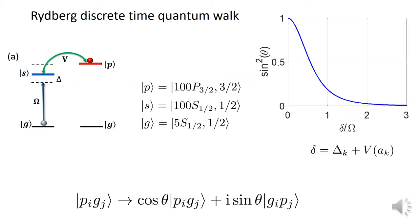To explain the scheme, first consider two lattice sites. The walker is initialized in the 100P Rydberg state, and the other site in ground state gets excited and de-excited to the 100S auxiliary state by the laser. Over this time, exchange interaction delocalizes the initial PG state to a superposition of PG and GP. The hopping angle is defined by the ratio of effective laser detuning to the laser Rabi frequency, where the effective laser detuning is the bare atom laser detuning modified by the exchange interaction.